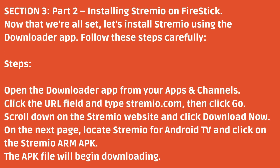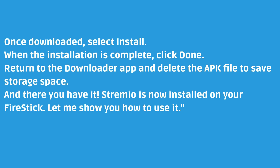Installing Stremio on Fire Stick. Now that we're all set, let's install Stremio using the Downloader app. Follow these steps carefully. Open the Downloader app from your apps and channels. Click the URL field and type Stremio.com, then click Go. Scroll down on the Stremio website and click Download Now. On the next page, locate Stremio for Android TV and click on the Stremio Arm APK. The APK file will begin downloading. Once downloaded, select Install. When the installation is complete, click Done. Return to the Downloader app and delete the APK file to save storage space. Stremio is now installed on your Fire Stick.